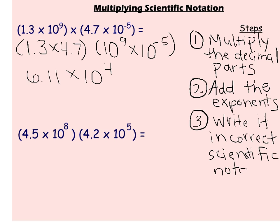My last step is to write it in correct scientific notation. If I look at what I have, 6 and 11 hundredths is between 1 and less than 10, and I have a base of 10 raised to an exponent — so that would be my answer.